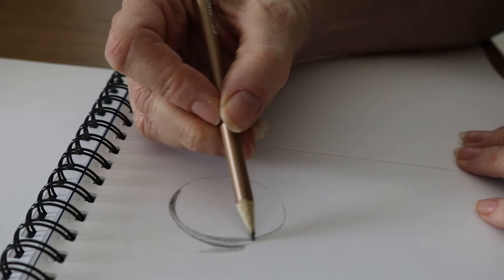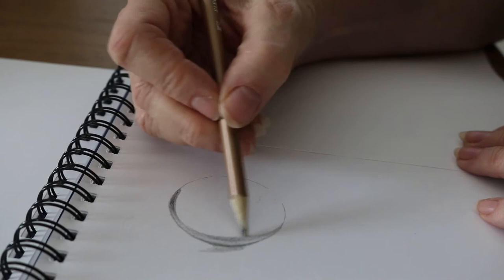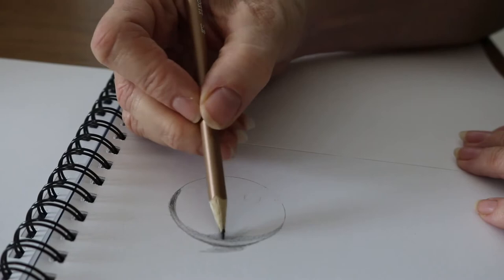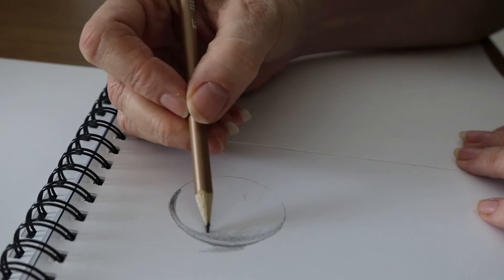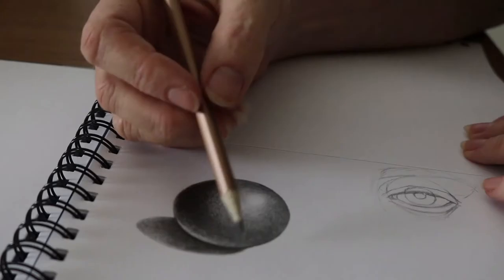You're creating the illusion of three dimensions on a two-dimensional surface. Eventually, the circle becomes a sphere that can seemingly pop from the page. That, to me, is truly magical.